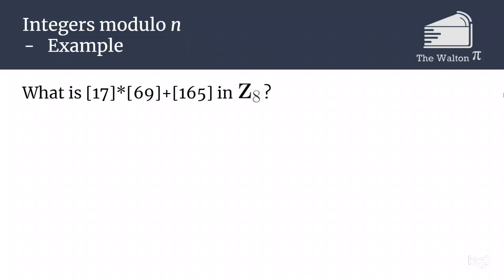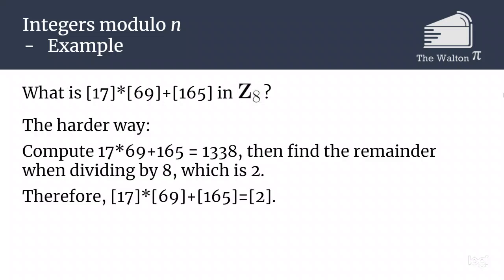So an example, what is the class of 17 times the class of 69 plus the class of 165 in Z mod 8? There's two ways to go about this. The harder way is to just straight up compute what that is and then find the remainder when we divide by 8. So it's going to be 2.